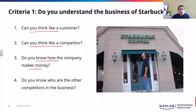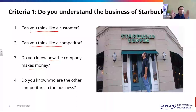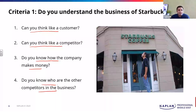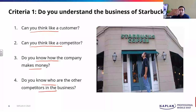Do you know how the company makes money? What do they do, in plain and simple words? For Starbucks, they sell coffee, snack items, croissants — how do they get their revenue? And do you know some other competitors in the business? If you can answer these questions, go ahead and start analyzing the company. Otherwise, don't even look at it.